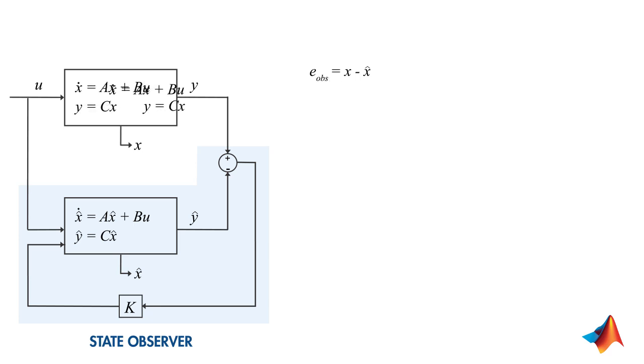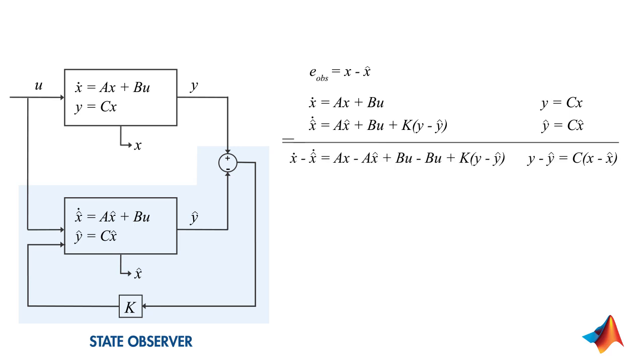Next, let's write down the equations for the system and the observer. If we subtract these equations from each other, this will give us the error dynamics. By rearranging terms, we see that the error dynamics can be shown by this equation.